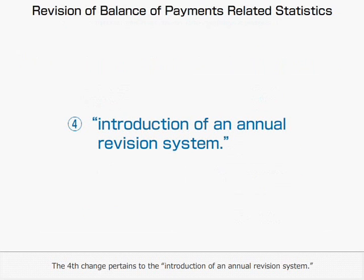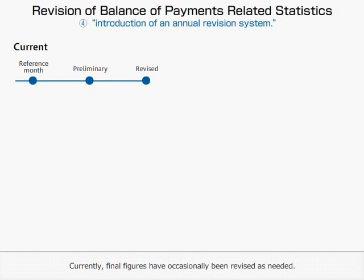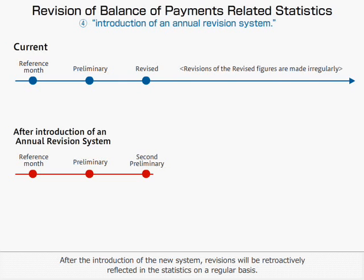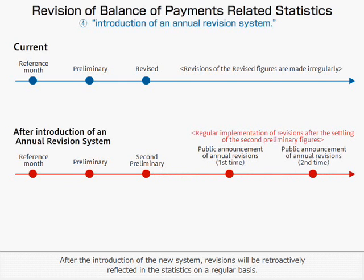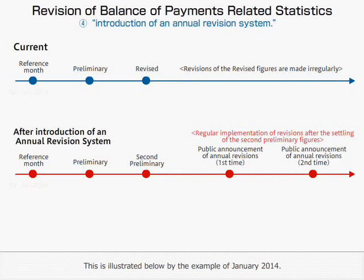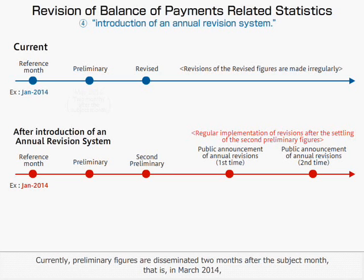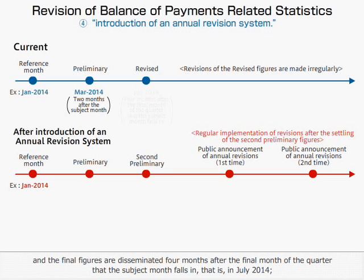The fourth change pertains to the Introduction of an Annual Revision System. Currently, final figures have occasionally been revised as needed. Preliminary figures are disseminated two months after the subject month — that is, in March 2014 — and final figures are disseminated four months after the final month of the quarter that the subject month falls in, that is, in July 2014. After that, irregular revisions are made as necessary.